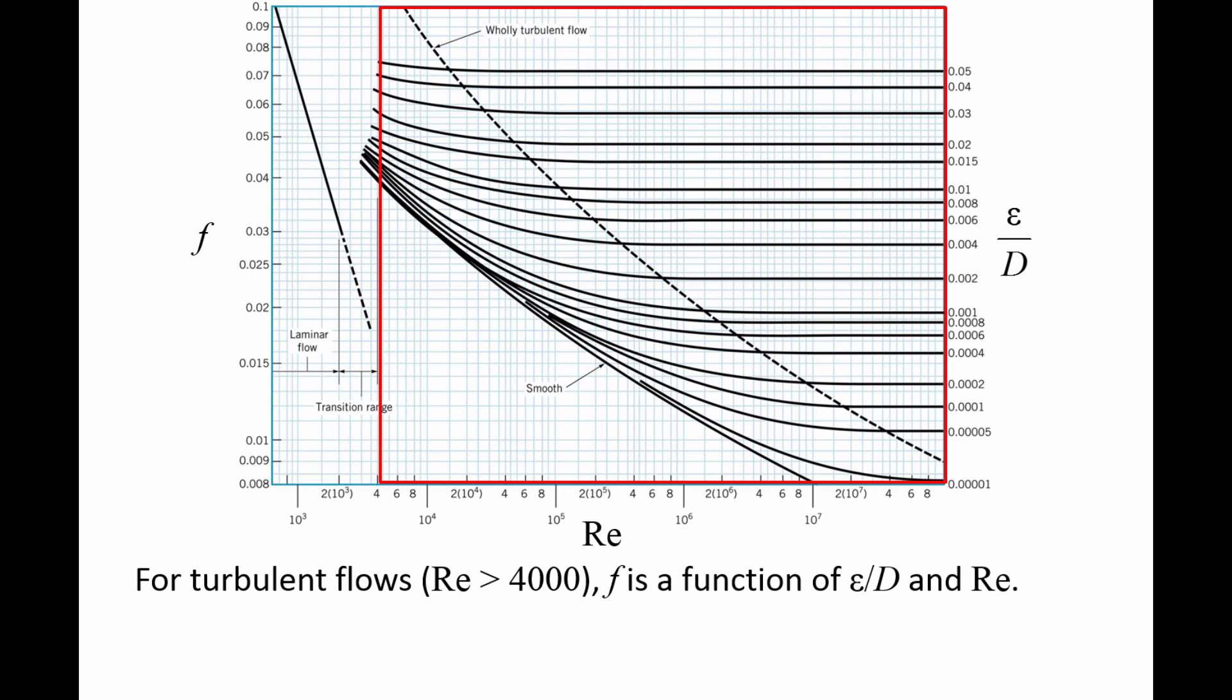For example, suppose the pipe you are examining has a relative roughness of 0.002. You would use the curve shown in orange to determine the value of the friction factor at different Reynolds numbers.